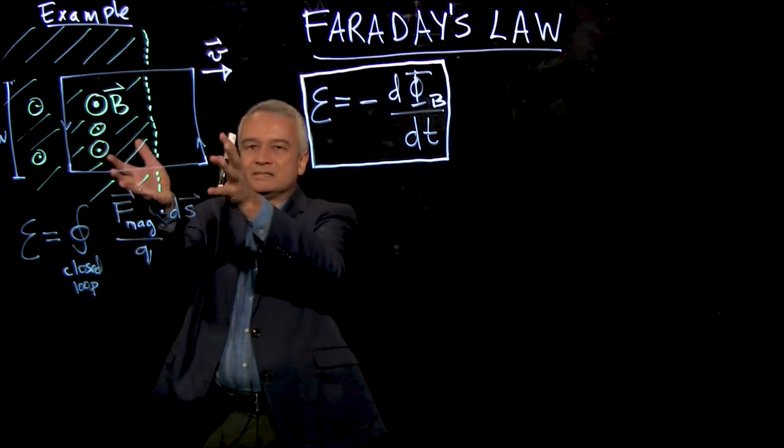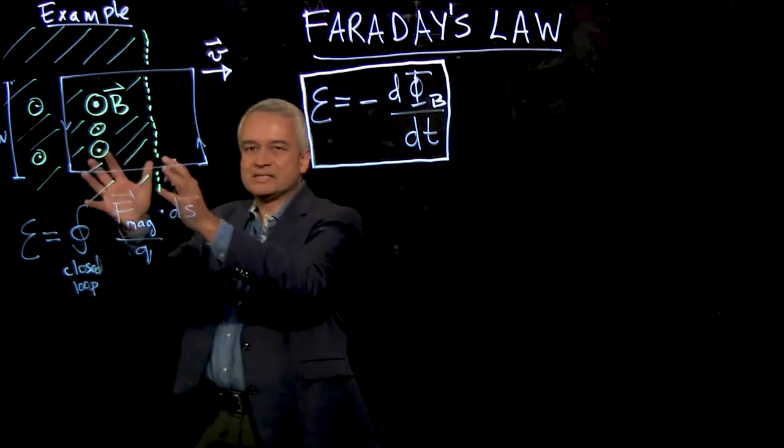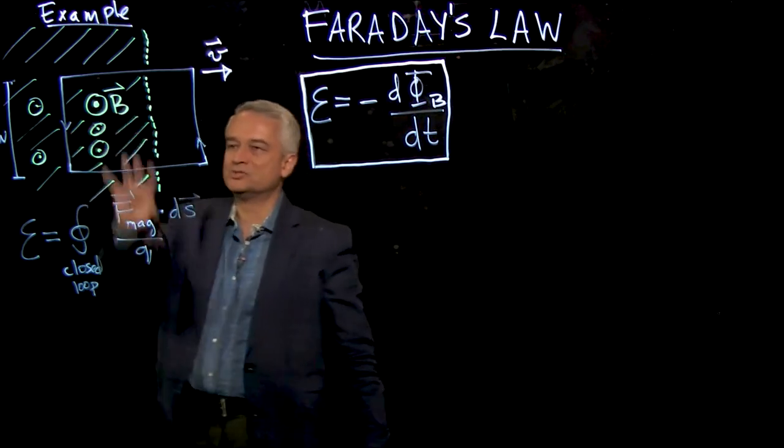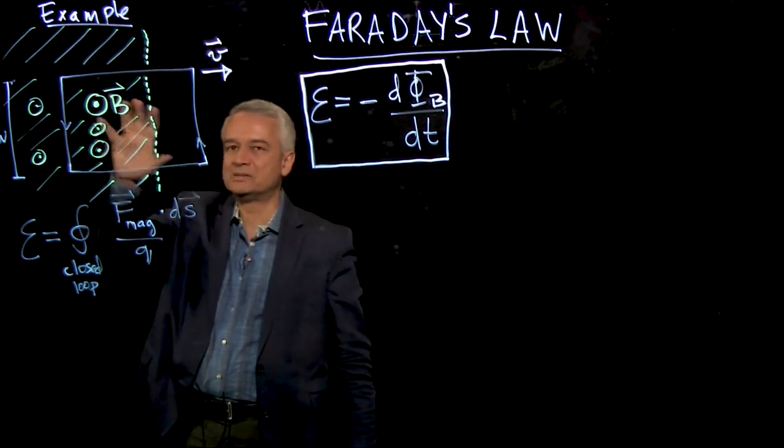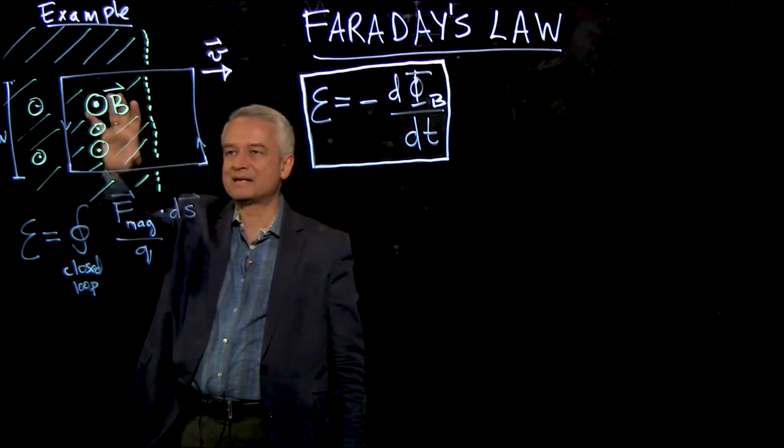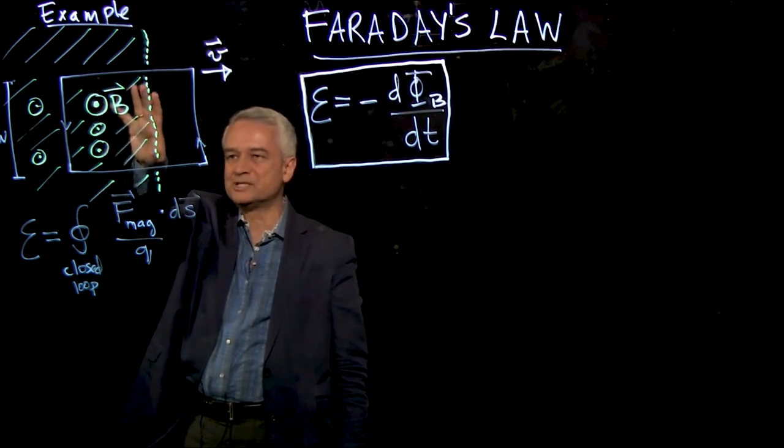If my loop is standing still, but whoever it is out there that has these magnets that are making this green magnetic field is changing the magnetic field. So suppose whoever is making the magnetic field, the loop's not moving anymore, but suppose whoever is making the magnetic field is changing where the field is so that the field region is moving this way.